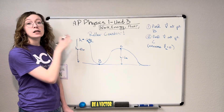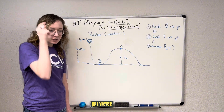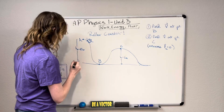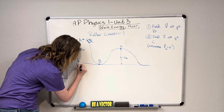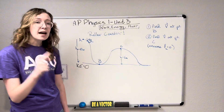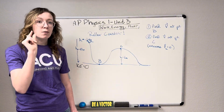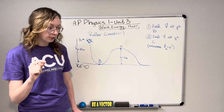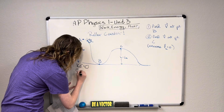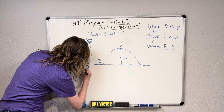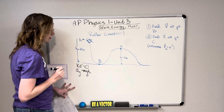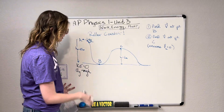Let's break down which energies we have at each point. At point A, we know that we're at rest. Anytime you hear the words 'at rest,' that means our velocity is zero, which also means our kinetic energy is equal to zero. However, we are at a height of 10 meters. Anytime we're given a height, that should clue you in that we're going to have some gravitational potential energy associated with our position. So here we can write that we have gravitational potential energy equal to mass times the gravitational constant times height.